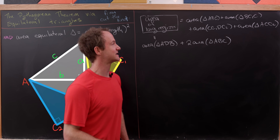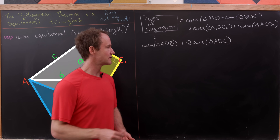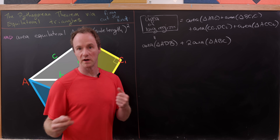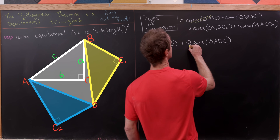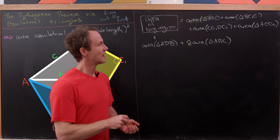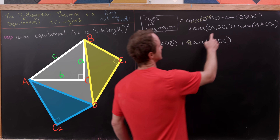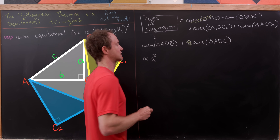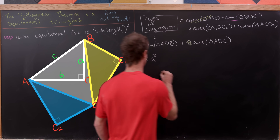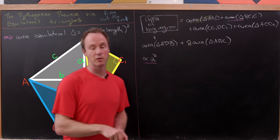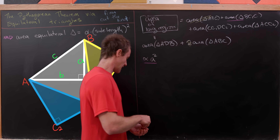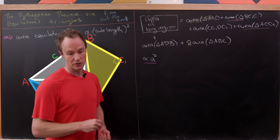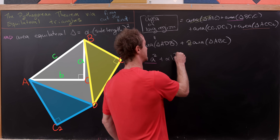The game is to calculate the area of this large region two different ways. First: as the area of the original triangle, plus the yellow equilateral triangle, plus the parallelogram, plus the blue equilateral triangle. We can simplify by canceling one instance of the original triangle area from each side. Then we note that the area of triangle BC1C2 is alpha times a squared, since it's an equilateral triangle with side length a.